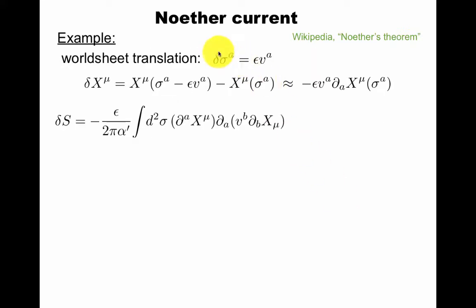Here's an example. You vary one of the world sheet coordinates, sigma one, sigma two, or space and time of world sheet. The variation in the embedding function x mu, so a bunch of scalar fields on the world sheet in one plus one dimension, they vary like this. If you're confused about the minus signs, think about active versus passive transformations in Noether's theorem. Here's the variation of the Polyakov action.